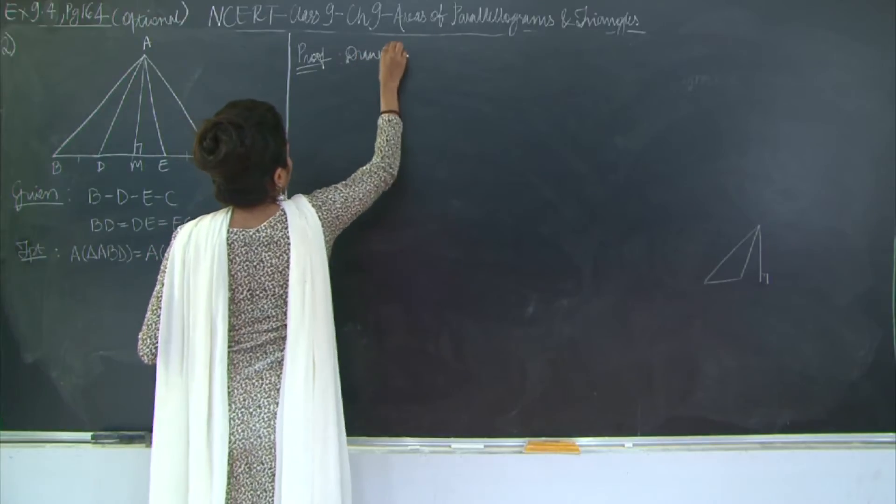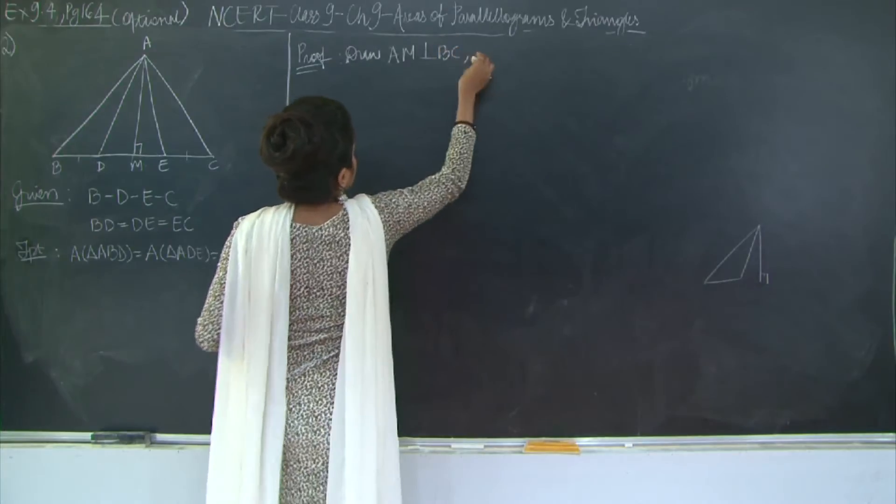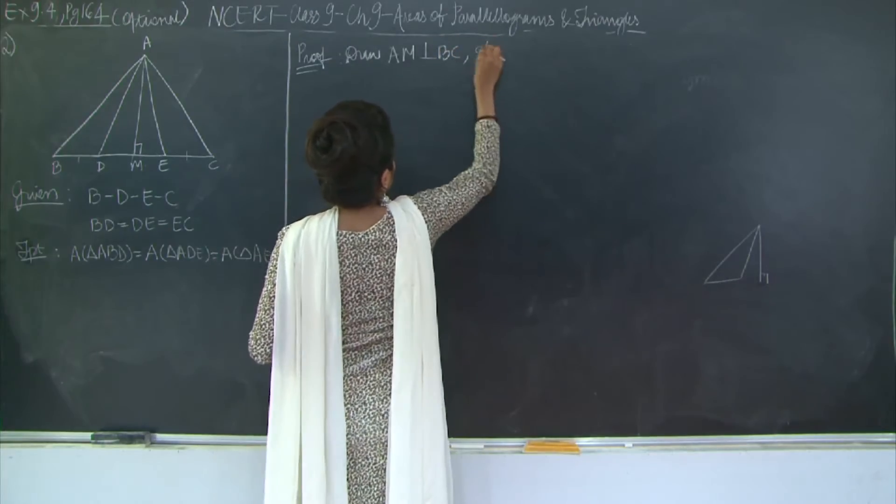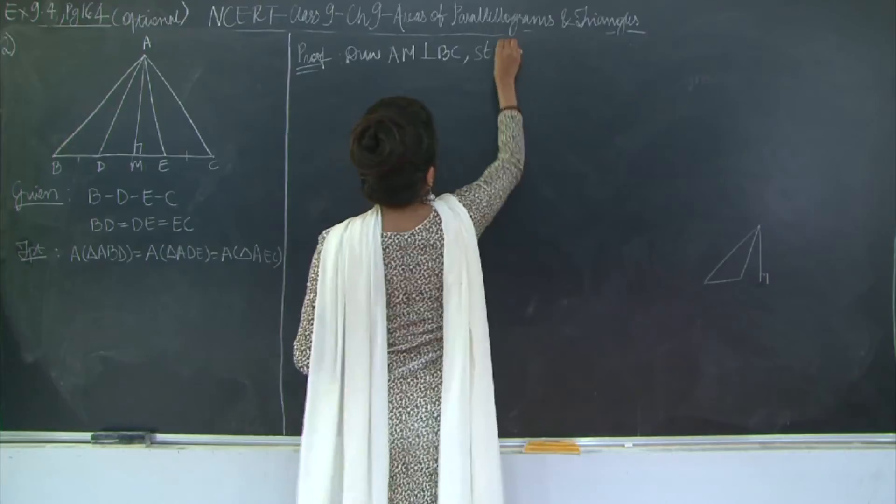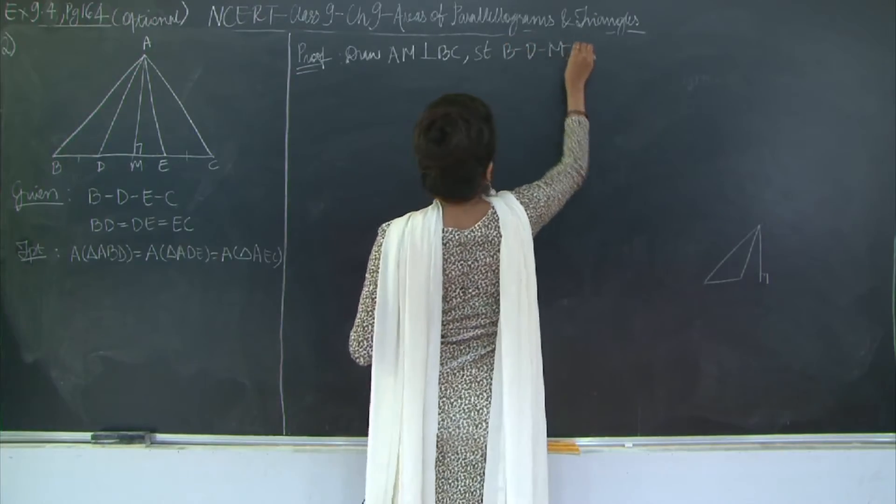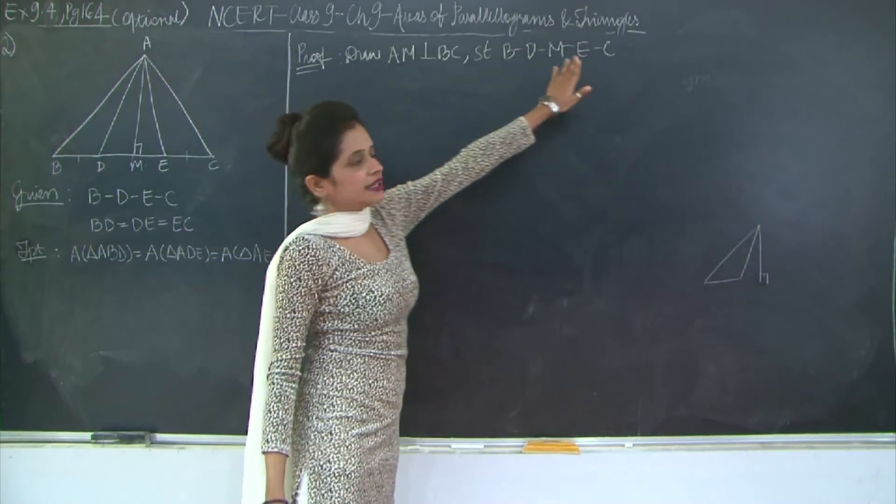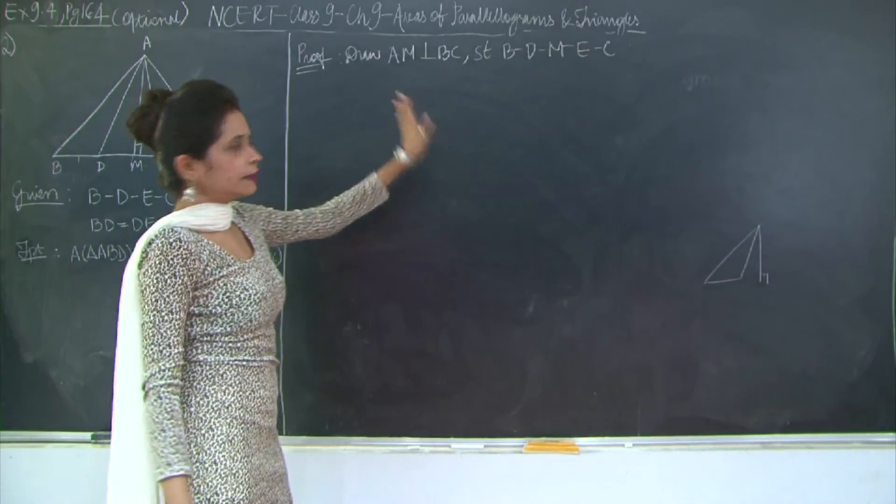Draw AM perpendicular to BC such that B, D, M, E, C. This means that the points B, D, M, E and C they lie on the same line BC.